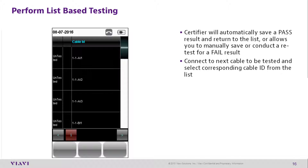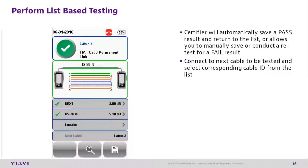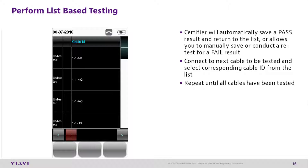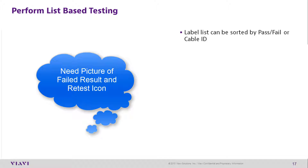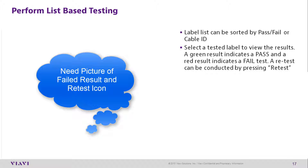Connect to the next cable to be tested and select the corresponding cable ID from the list. Repeat until all cables have been tested. Label lists can be sorted by pass/fail or cable ID. Select a tested label to view the results — a green result indicates pass and a red result indicates fail. A retest can be conducted by pressing Retest. Press the Auto Test button to return to the list.